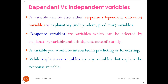The dependent variable is also called the response variable, while the independent variable is called the predictor or explanatory variable. The dependent outcome variable can be either a response variable or a dependent outcome variable, while the explanatory independent predictor variable explains it. The dependent variable can be affected by the explanatory variable.